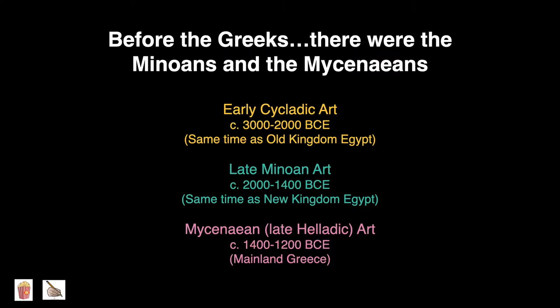Before the Greeks, there were the Minoans and the Mycenaeans. The prehistoric Aegean can be divided into three periods: early Cycladic art from 3000 to 2000 BCE, the same time as Old Kingdom Egypt; late Minoan art, 2000 to 1400 BCE, the same time as New Kingdom Egypt; and finally, Mycenaean late Helladic art, 1400 to 1200 BCE, which comprises mainland Greece.